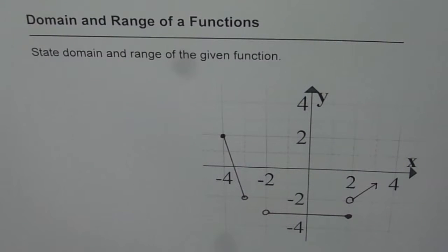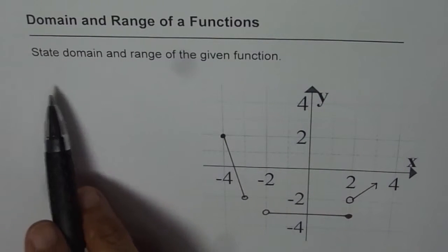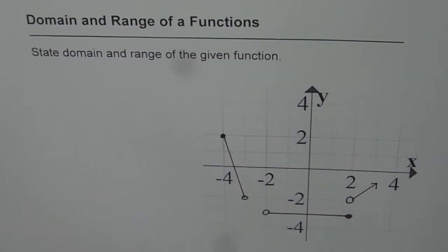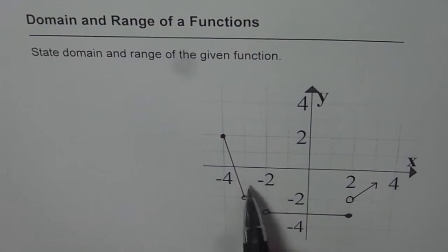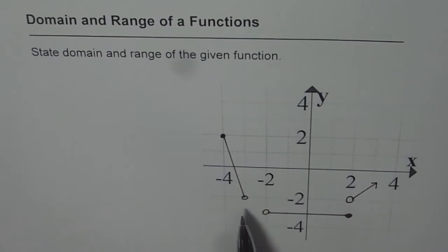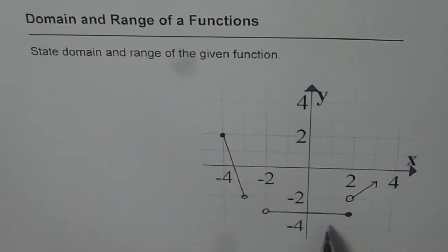Let us understand how to write domain and range of a function from the given graph. State domain and range of the given function. Now the function given to us is a piecewise function, so there are three different pieces. Let's look into them very carefully and then write down the domain.